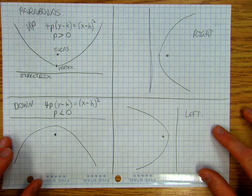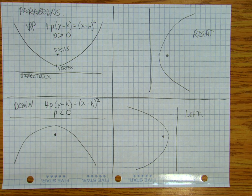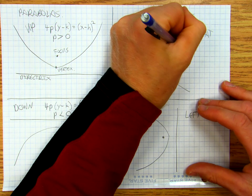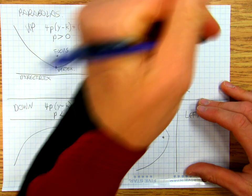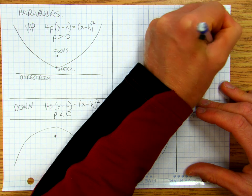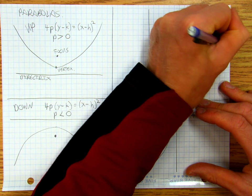Can you think about how we're going to get it to open to the right? Well, in order to open to the right, what we're going to do is we're going to say 4P, watch this, (x minus h) equals (y minus k) squared.